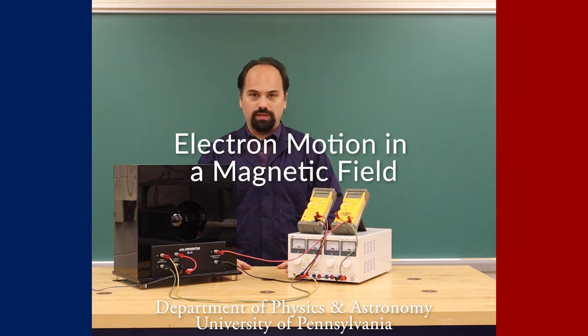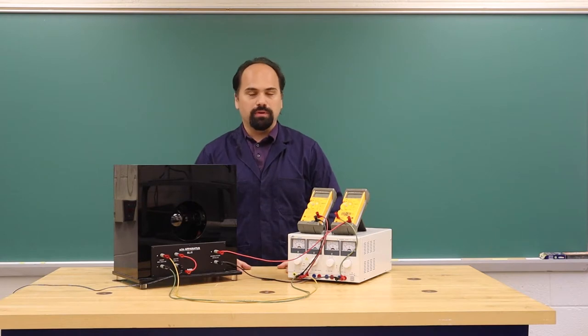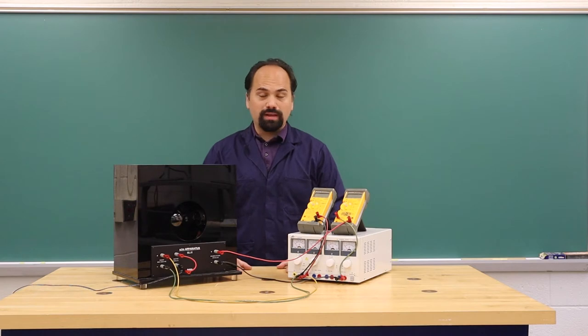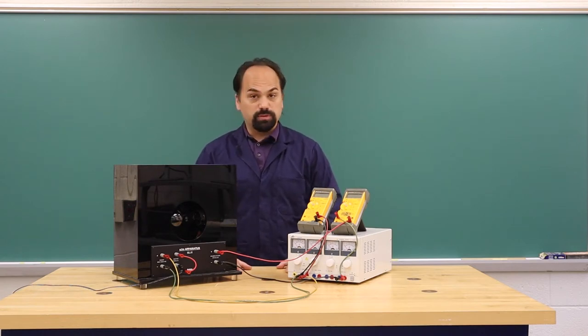Electron motion in a magnetic field. In this lab you will be creating a cathode ray, a beam of electrons, and allowing that beam to travel inside a uniform magnetic field, which will alter its path.